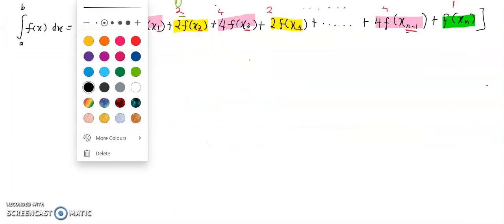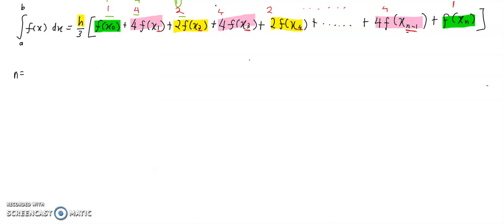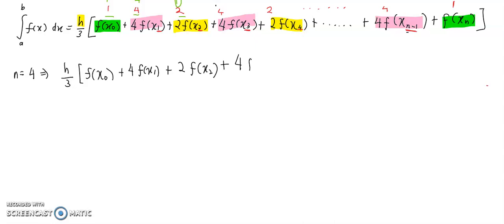Okay, let's say if n is 4. The formula will be like this: h over 3 times f of x0 — the first term — plus f of x1, plus 2f of x2, plus 4f of x3, and plus the last term, 4f of x4.